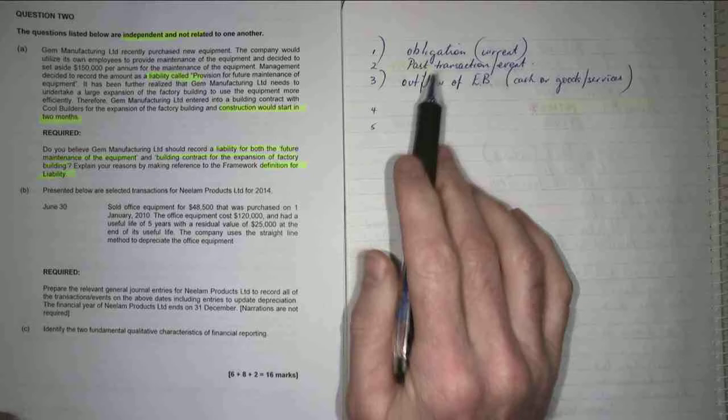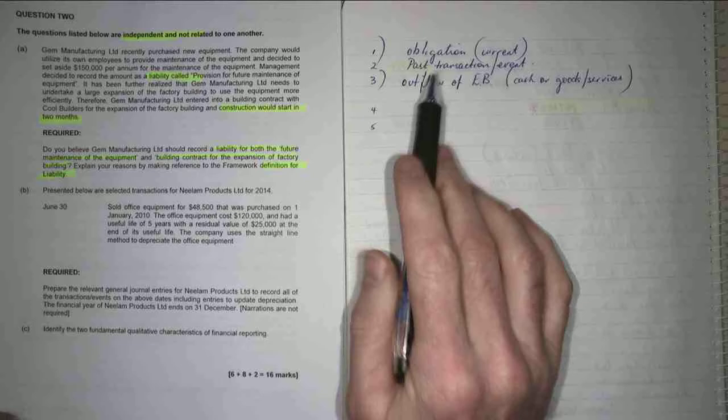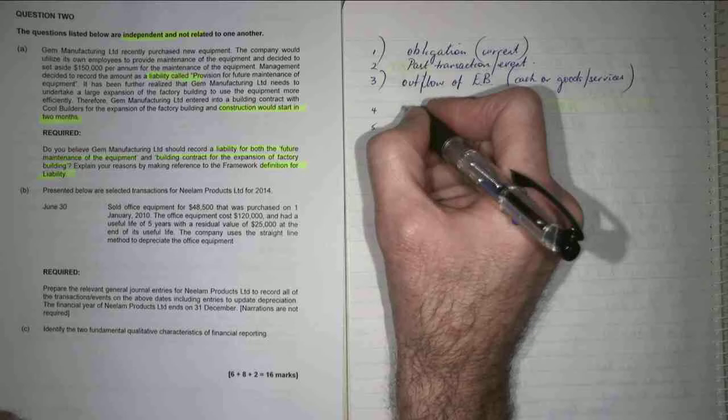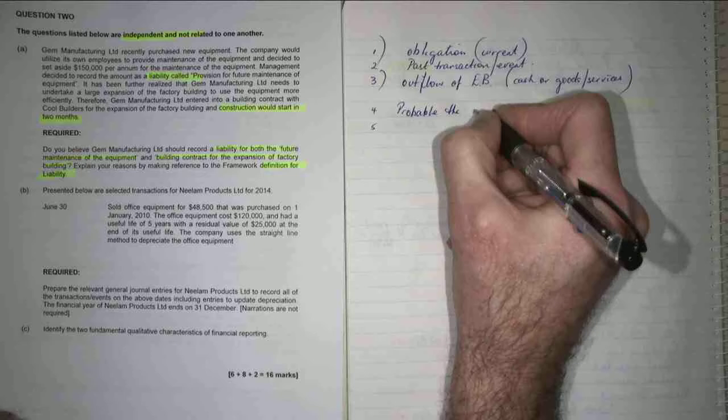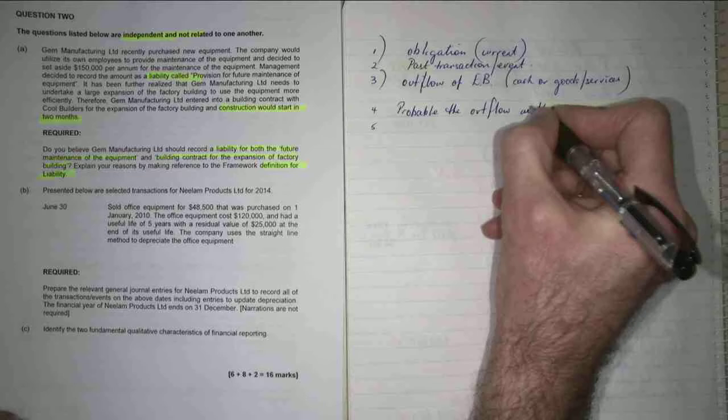When do we recognise? So now if we've got these three things, we've got a liability. When do we recognise the liability? When it's probable the outflow will occur.